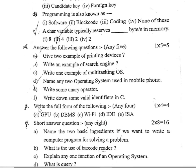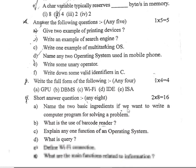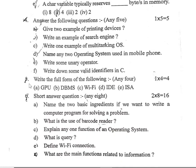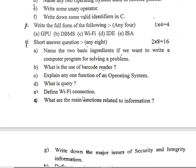Section five: Write the full form of the following, any four, one mark each. GPU, DBMS, Wi-Fi, IDE, ISA.